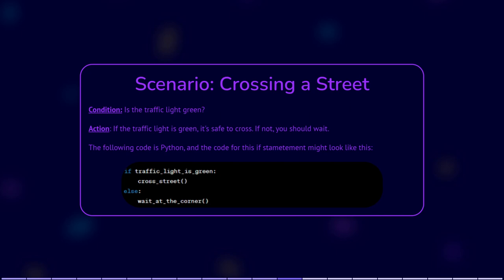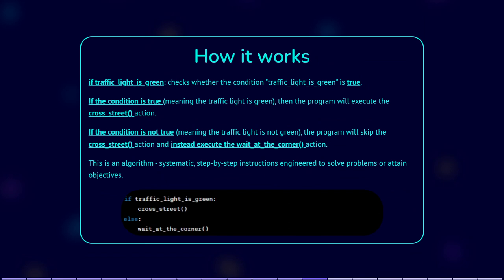Here's how it works. If traffic_light is green checks whether the condition is true — binary: true or false? If the condition is true, meaning the traffic light is green, the program will execute the cross street action. If the condition is false, the program will skip the cross street action and instead execute the wait-at-the-corner action. This is similar to how we make decisions in real life: if the traffic light is green, we cross the street, and if not, we wait.